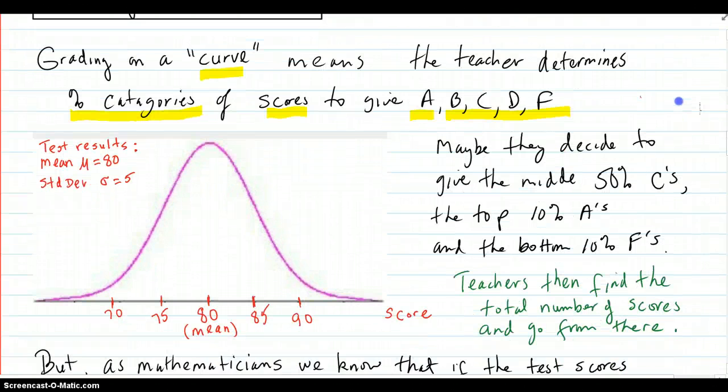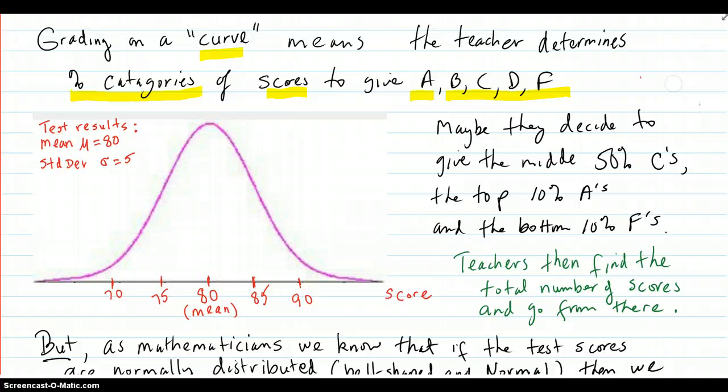So, let's say that there was a test and it came out like this. Here's the test results. The mean was 80, that's the average. The standard deviation or spread of the data was 5, meaning that once you get to 85, it's a little harder to get up there. 90, pretty hard to get up there. 95, extremely hard to get up there.